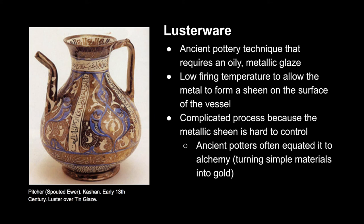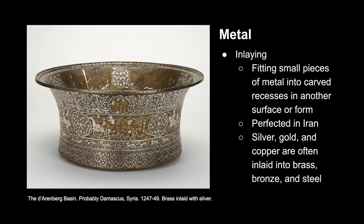Moving on to lusterware — this is an ancient pottery technique that requires an oily metallic glaze. It has a low firing temperature, which allows the metal to form a sheen on the surface of the vessel. This process was so complicated that ancient potters often equated it to alchemy, the turning of simple materials into gold, because the metallic sheen is really hard to control.